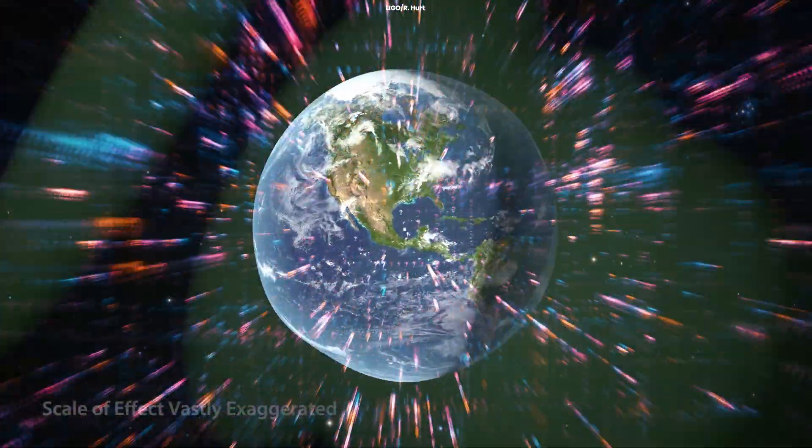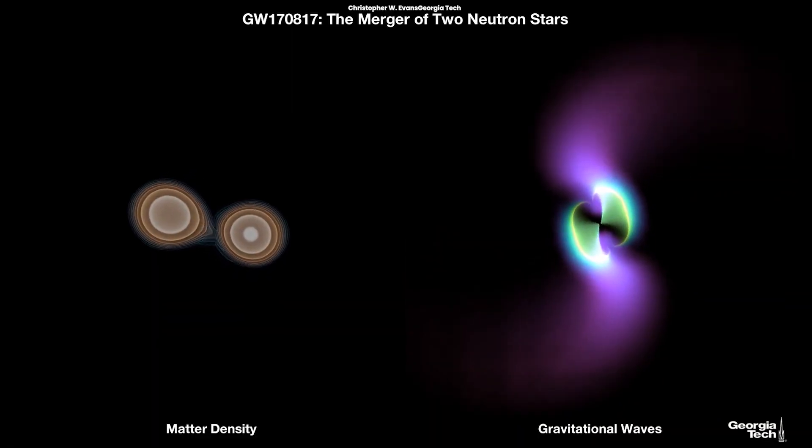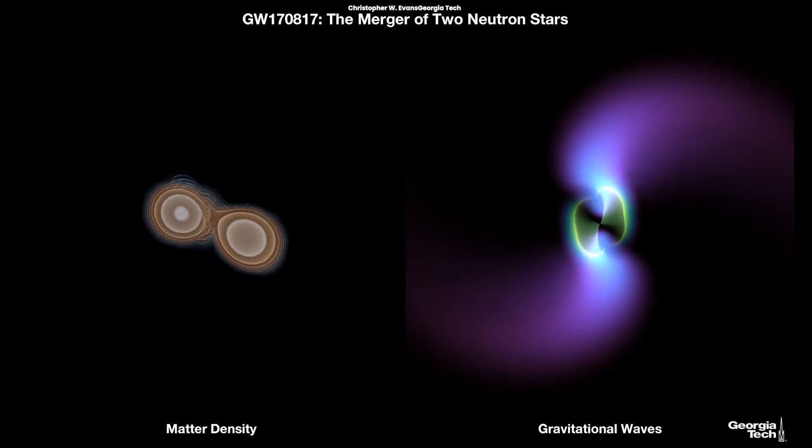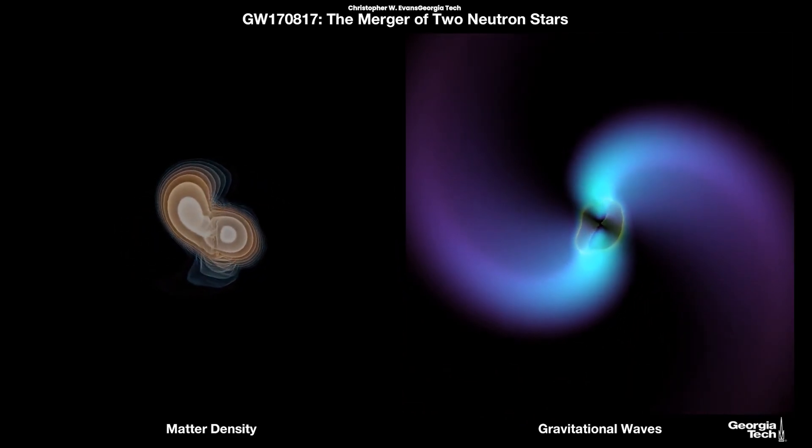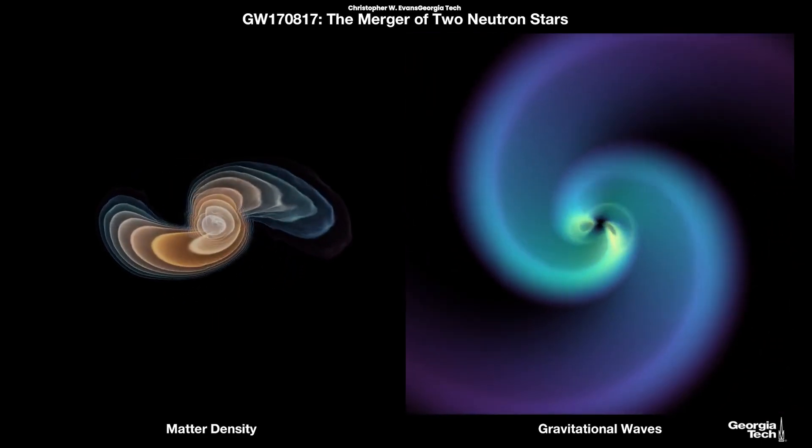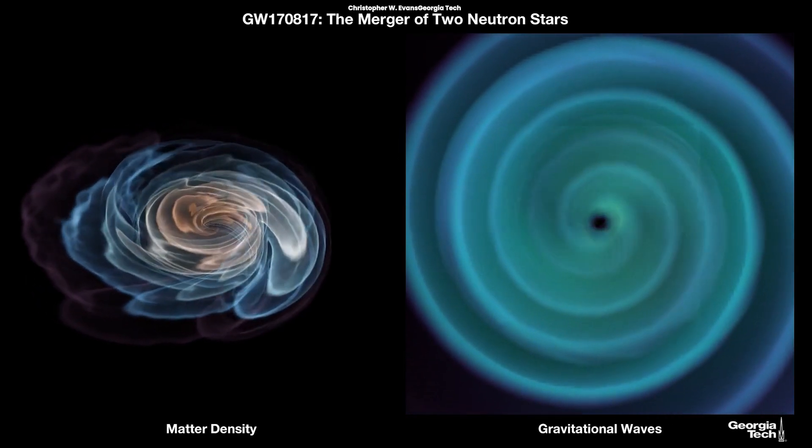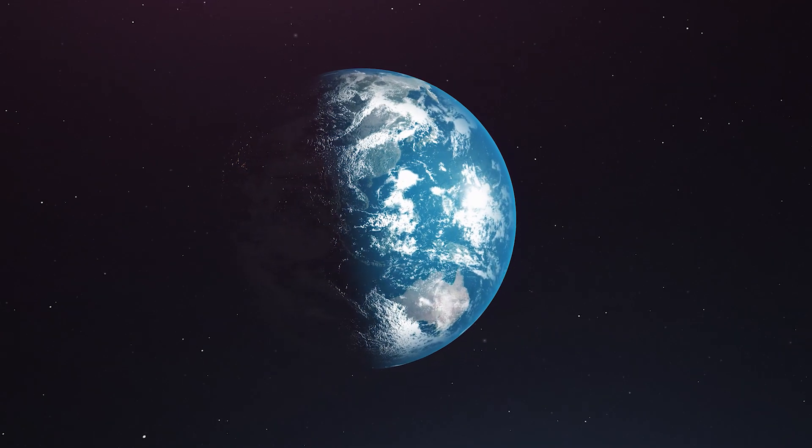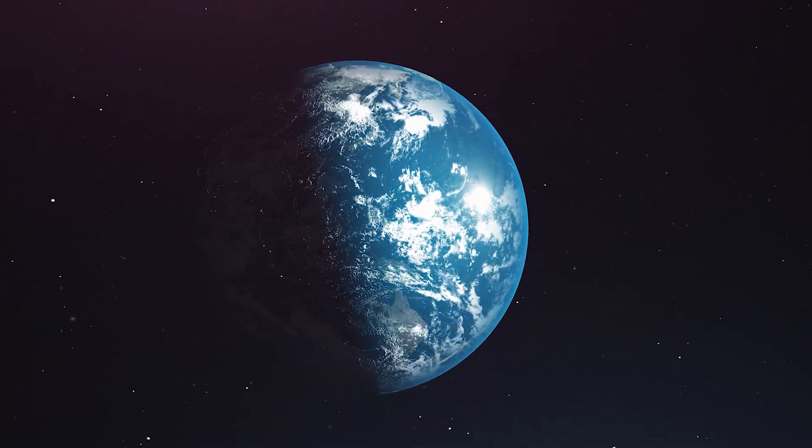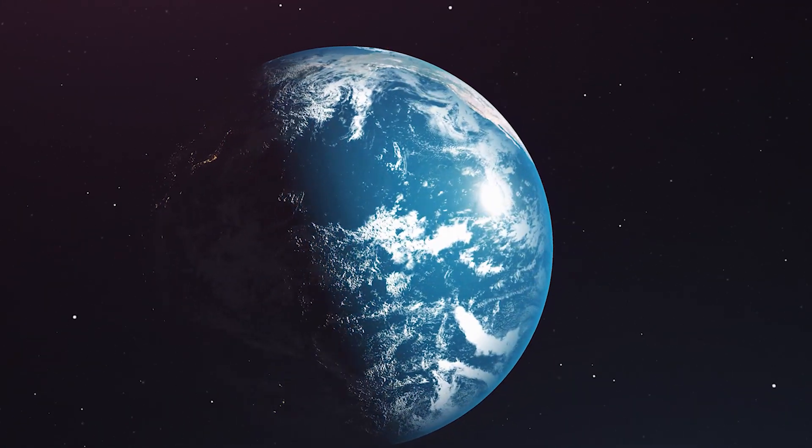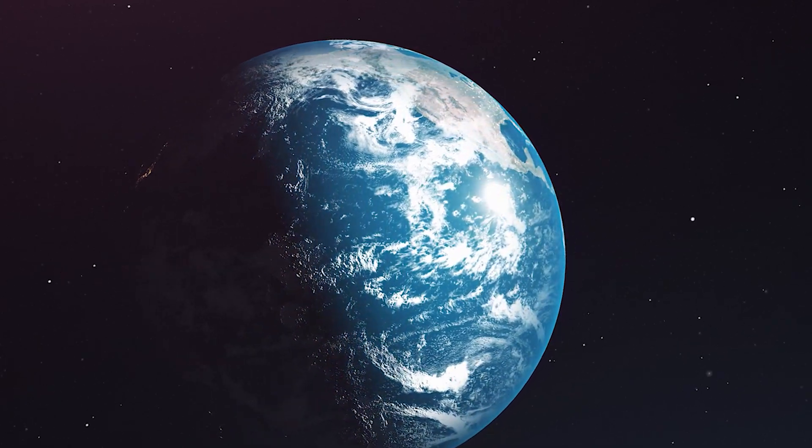But how do we know they travel at the speed of light? In 2017, LIGO and Virgo detectors observed gravitational waves coming from the merger of two neutron stars about 130 million light-years away, an event known as GW170817. When the gravitational signal came, it took an additional 1.7 seconds for light to arrive, the high-energy gamma rays from the collision.